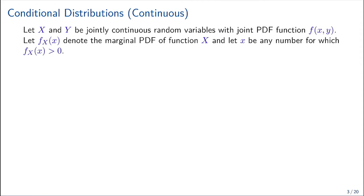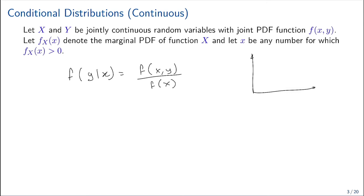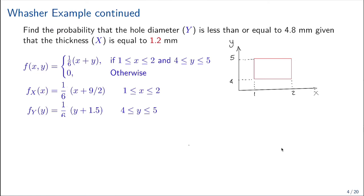Now let's look at the conditional distribution for a continuous function. If x and y are jointly continuous random variables with joint probability density function f(x, y), and f(x) is the marginal probability density function of x, then for any x for which f(x) is greater than zero, the conditional probability density function of y given x equals the joint density function f(x, y) divided by f(x). We integrate with respect to y to obtain f(x) for a given value.